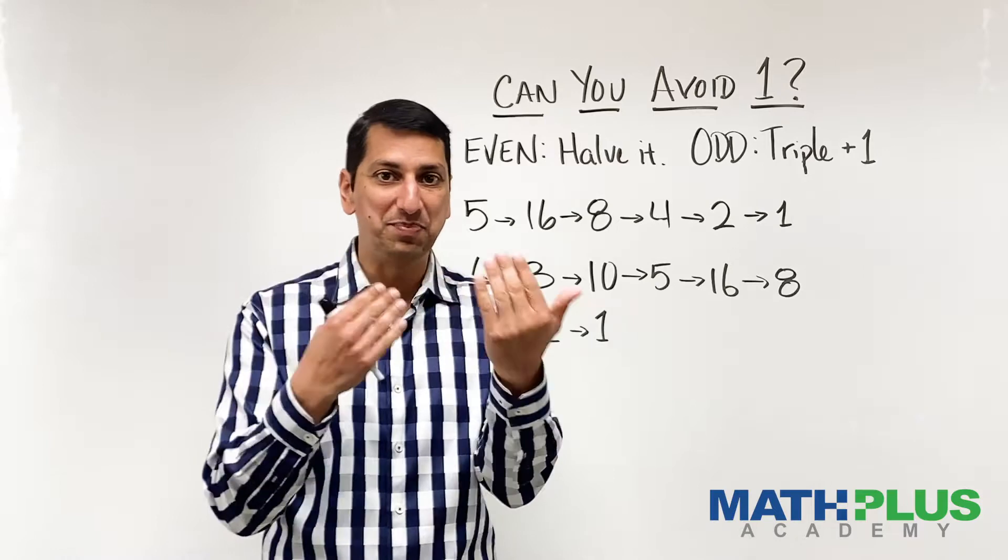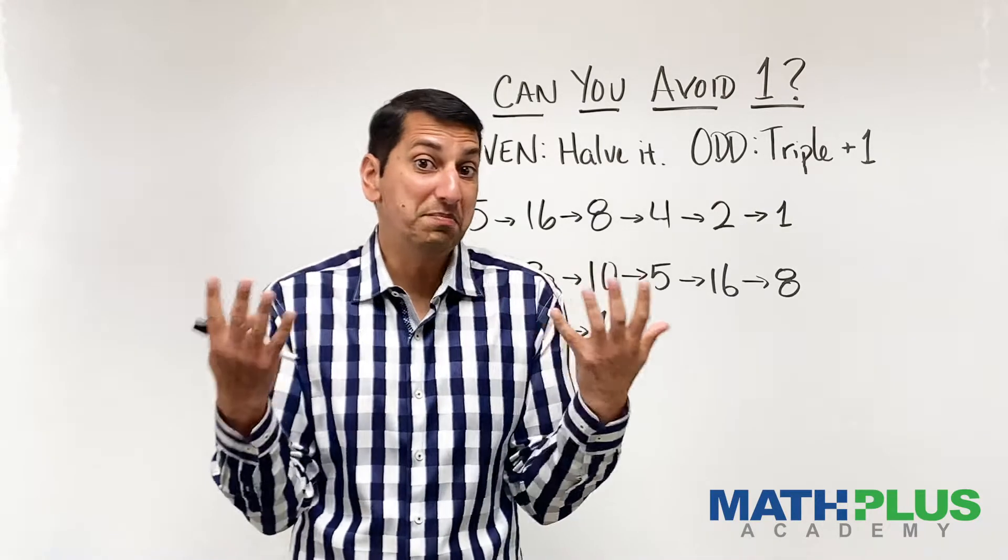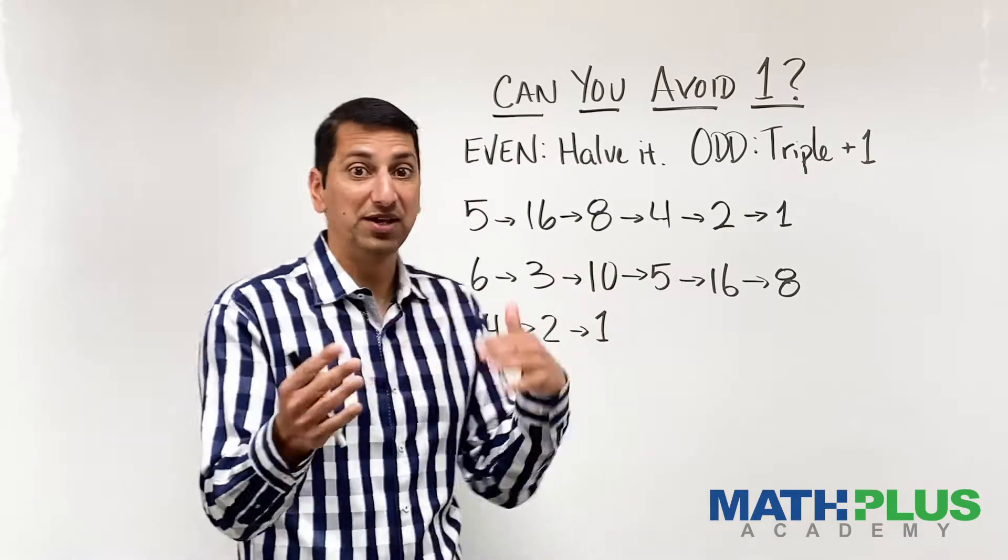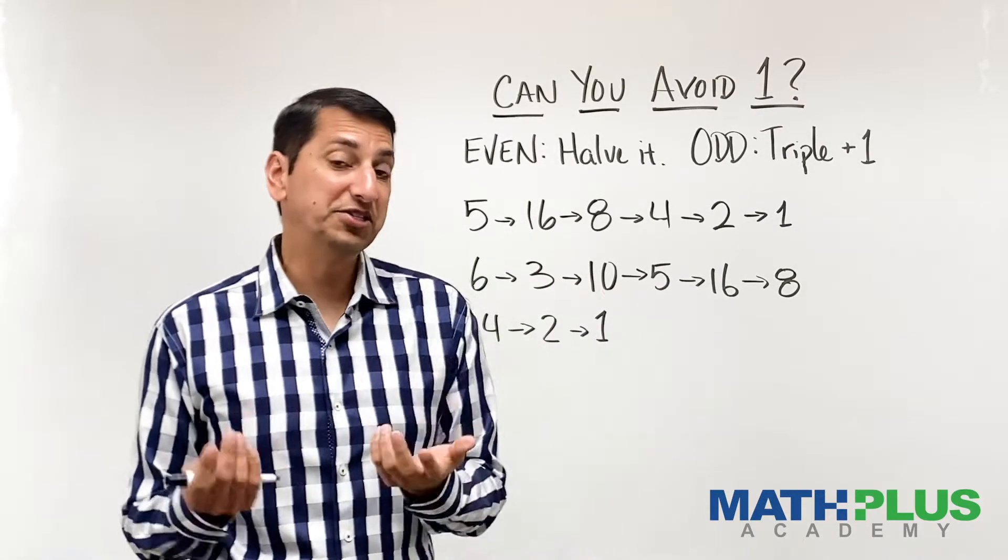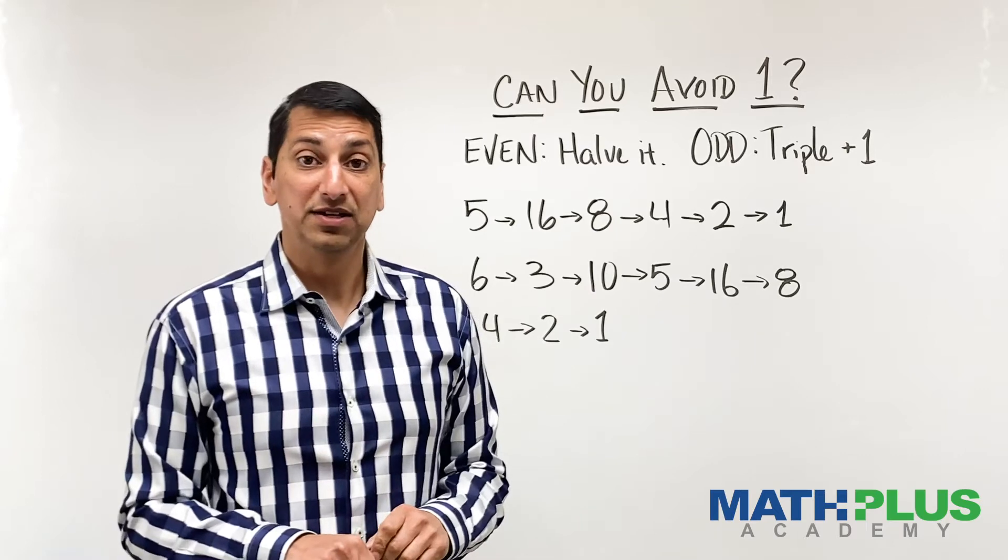So in a way, these two rules kind of balance each other out. So you could imagine maybe there's some numbers you could pick where you can sort of bounce around and avoid the four, two, one loop somehow. So I want you to see if you can maybe find numbers like that.